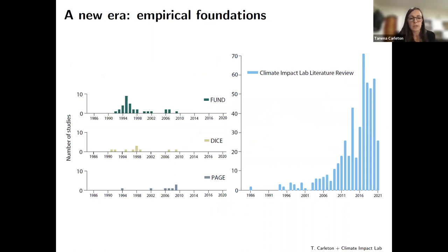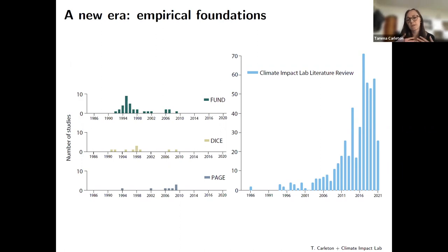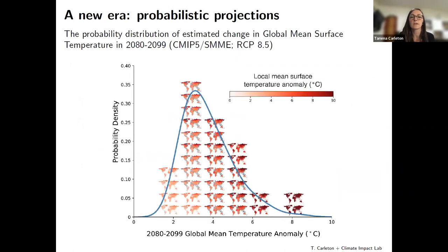Another important feature of the new era of climate damage estimation is its empirical foundation. On the left is a histogram of publication dates of empirical papers behind the original IAMs going into the original US social cost of carbon; on the right, evidence of an explosion of empirical work in this space — the type of work that can and should be brought into both bottom-up and top-down damage estimations.